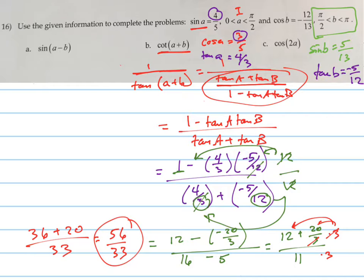And then the last one, cosine of 2A. There's a formula for the double angle. The cosine of 2A equals the cosine squared of A minus the sine squared of A. That's actually pretty easy, because we already have those values.